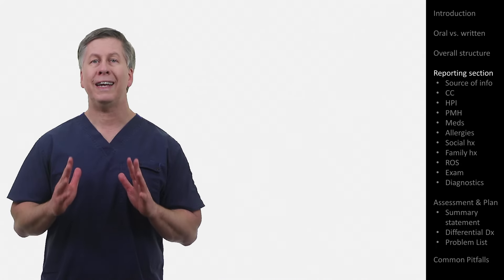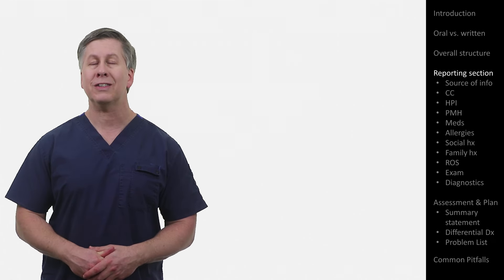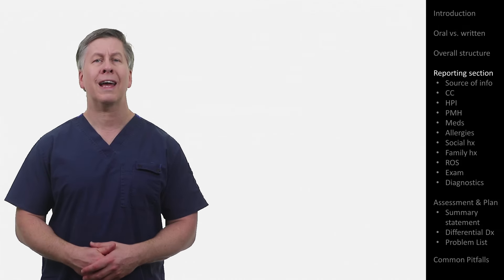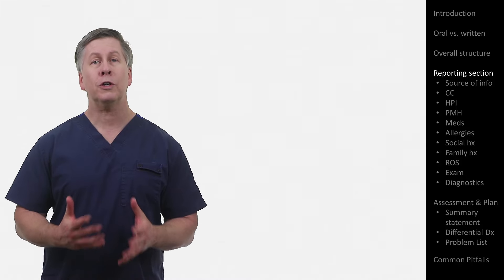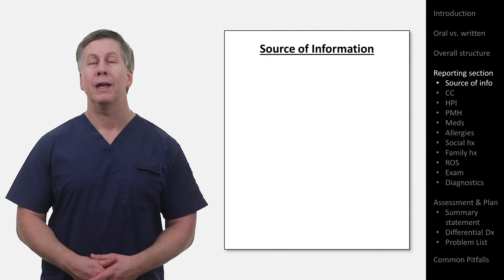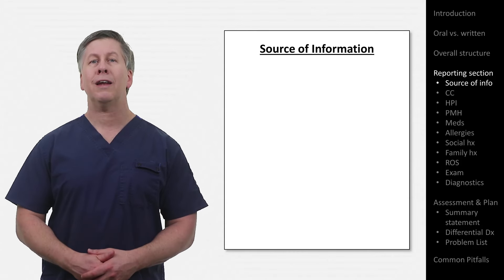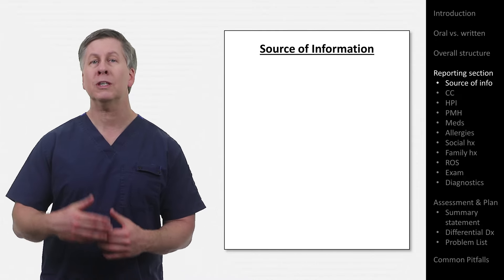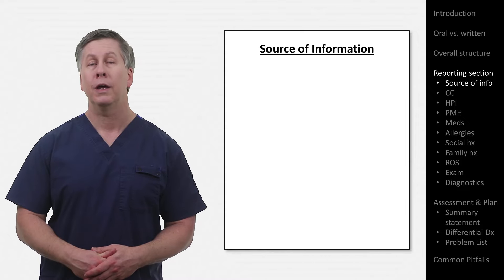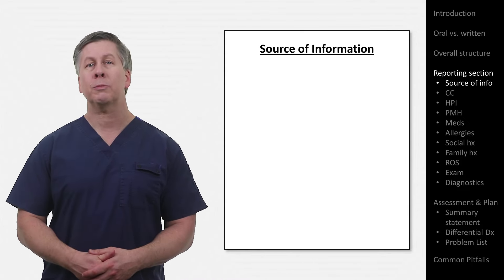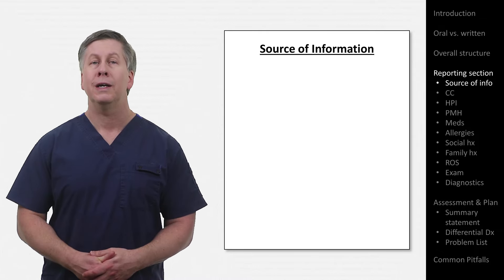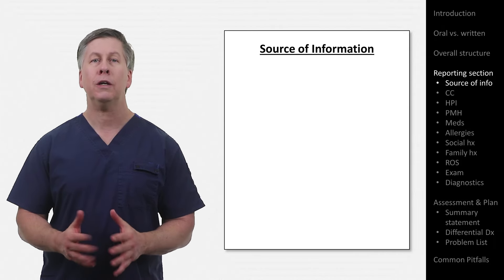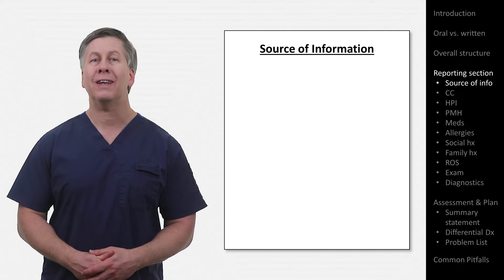I'm going to go through each subsection one at a time to explain its content and format. This is the conventional order you'll find these in the medical chart, with some mild and inconsequential variability. First up is the source of information. In practice, this is frequently omitted, but when included, it refers to the source of information primarily for the history of present illness and review of systems — or the symptoms that the patient has most recently been experiencing. However, it may also include the source of the past medical history, social history, and family history. It sometimes includes the patient's perceived reliability.